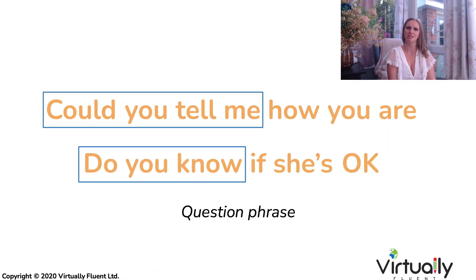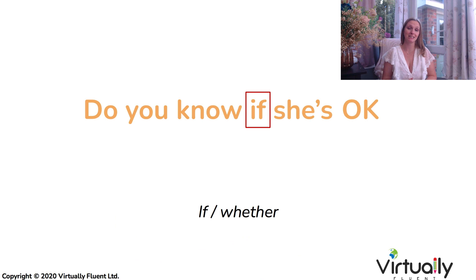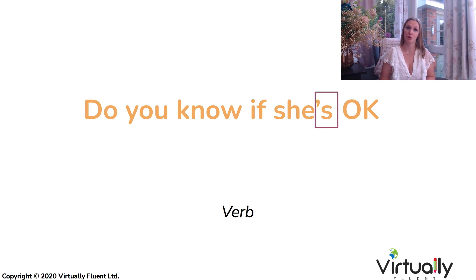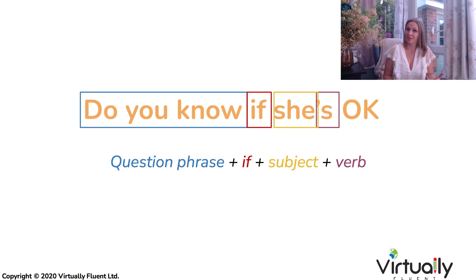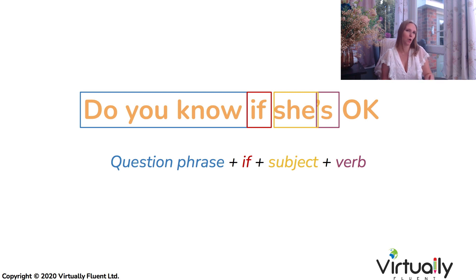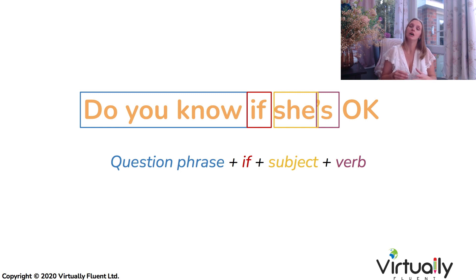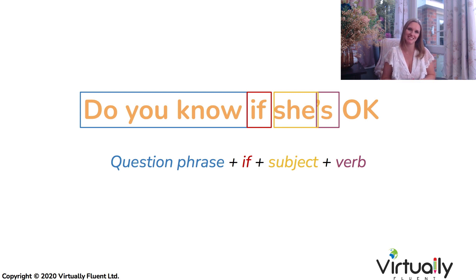So how is our second question structure any different? Because it starts the same — it starts with a question phrase — but now we want to insert the word 'if' or 'whether', then our subject, and finally our main verb. 'Do you know if she is okay?' So this structure is: question phrase, then if or whether, then subject, then main verb. The reason this is different is because we don't have a question word. Those question words — who, what, where, when, why, how — if we don't have any of those, we need to insert 'if' or 'whether' before our indirect question. If they do have a question word, then we use the other structure we just looked at.